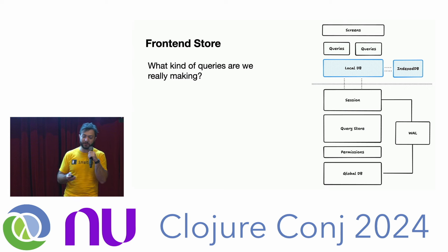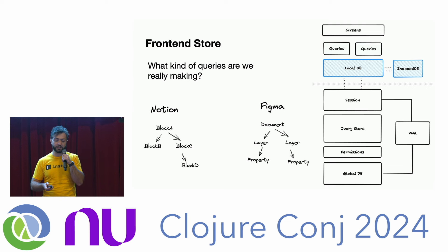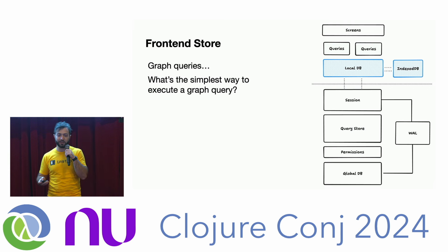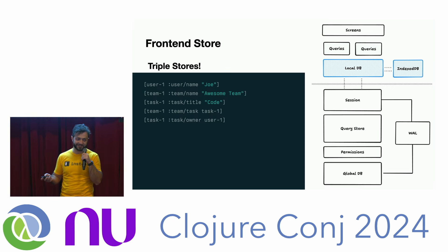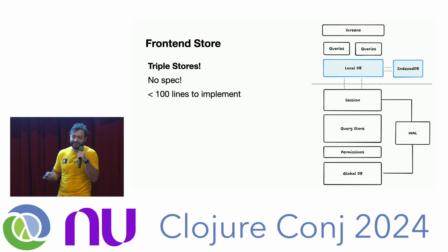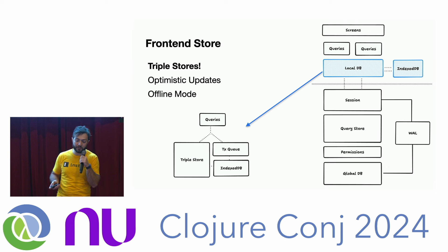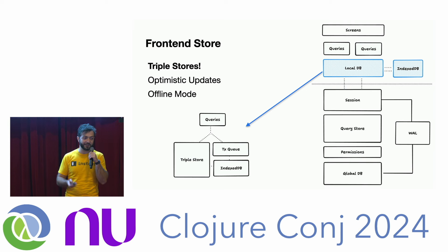Also, the queries on the front end often look like trees — teams, tasks, owner. You could write that SQL query, but it returns one row, not the denormalized structure you want. So we went back to the drawing board. A lot of these queries are graph queries. The simplest way to execute a graph query? Triples. Just store triples, and you get relations — no big spec needed. A basic DataLog implementation takes about 100 lines. So on the front end we have a triple store, a transaction queue persisted to IndexedDB, and we get optimistic updates and offline mode for free.